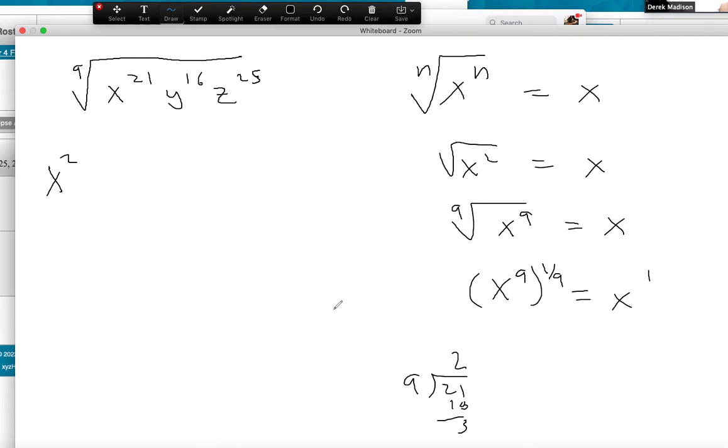So what that means is x squared is coming out because nine goes in twice and then x cubed, the remainder of those last three, are going to stay in the radical.